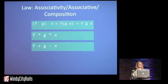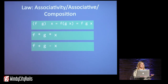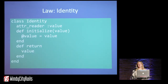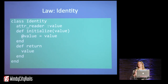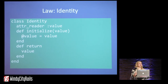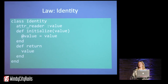With monads we've got a couple of laws: associativity, also called the law of composition, and identity. Here is our identity monad — essentially a class where we define identity with join and return. Return is just going to return the value shoved into your monad, so we have an identity of a value. Join is really just returning the value, because identity always means it's going to return the thing that you give it.